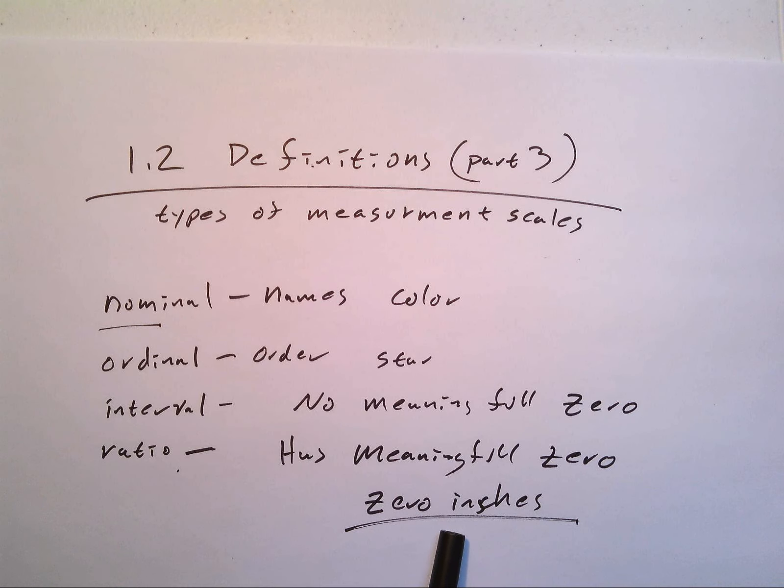So again, nominal is only names - you can't compare one to the other, you can only assign it this group or that group. Ordinal has an order on it, think star ratings.